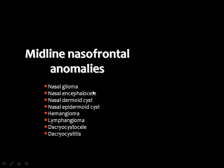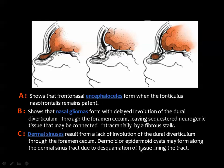Moving to the midline nasal-frontal anomalies, we discuss nasal glioma, encephalocele, dermoids, and epidermoid cysts. There is a foramen or duct that usually regresses and closes. If this canal remains patent, brain tissue and meninges may herniate, resulting in an encephalocele. If the duct regresses with residual glial tissue, you get a nasal glioma, which may be extranasal, intranasal, or both. Incomplete involution of the neural diverticulum can produce dermal sinus and dermoid cysts.